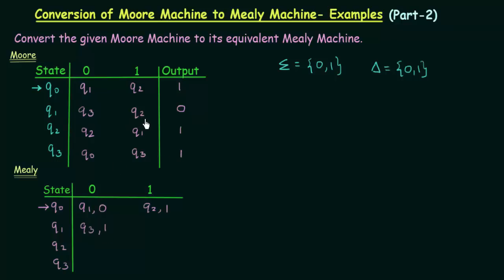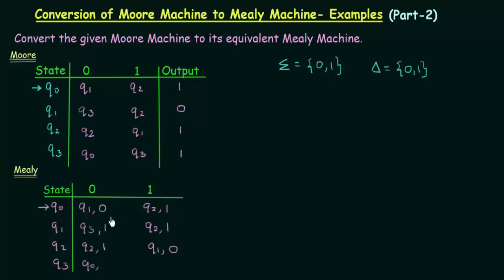Now come to state Q2. Q2 on input 0 goes to Q2 itself, and what is the output associated to Q2? It is 1. And on input 1, Q2 goes to Q1. Q3 on input 0 goes to Q2, and what is the output associated to Q2? It is 1. And on input 1, where does Q3 go? It goes to Q3 itself, and the output associated to Q3 is 1.